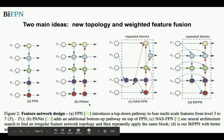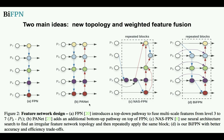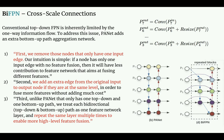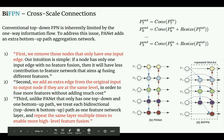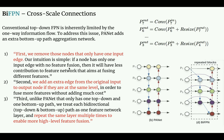The BiFPN looks quite similar to PANet, with a few key differences. First, certain nodes are removed — the authors argue that if a node has only one input edge with no feature fusion, it contributes less to the feature network. For example, in PANet a node might only take input from P7 at the same level, whereas in BiFPN the corresponding node takes input from P7 as well as P6, giving multi-scale feature fusion. So nodes with only one-level input are removed.